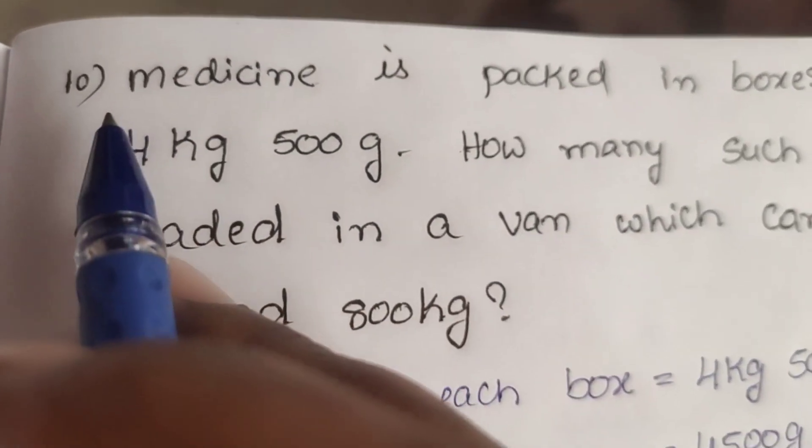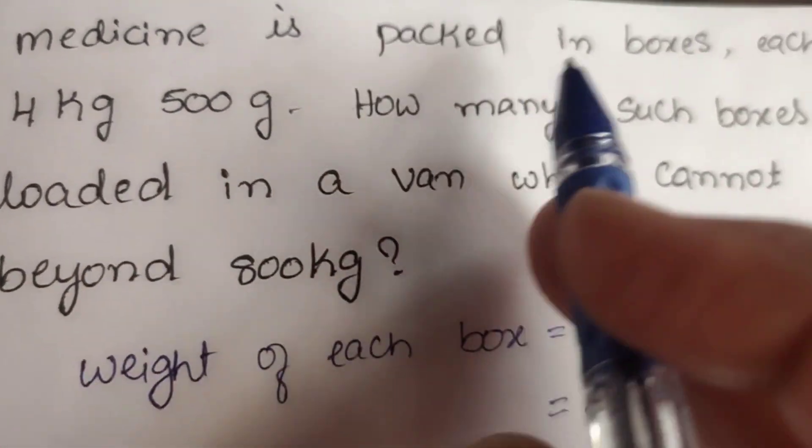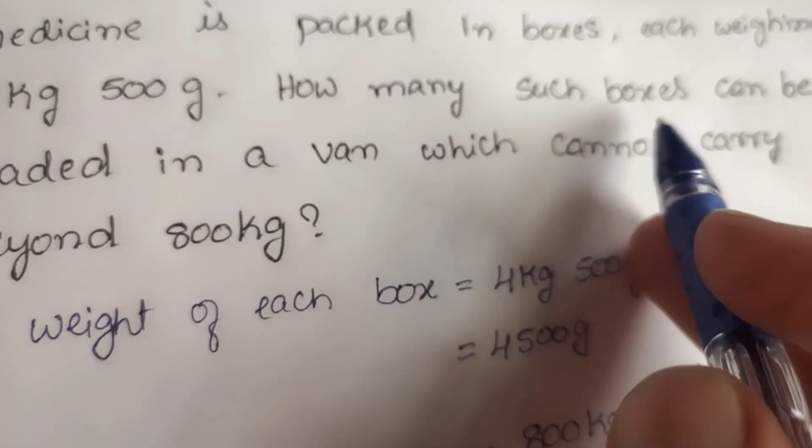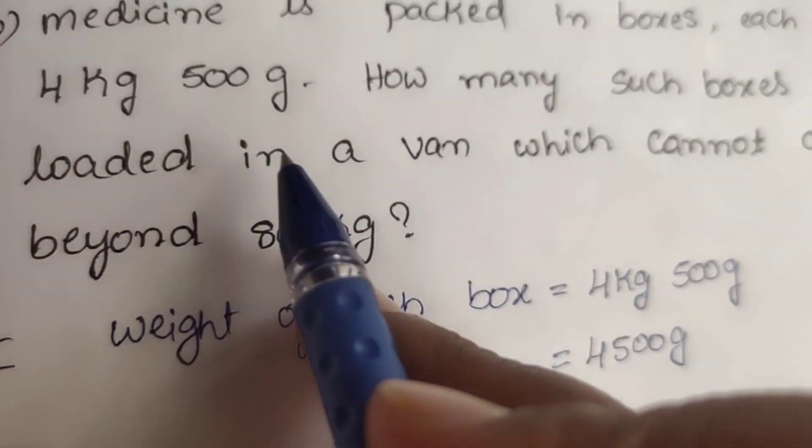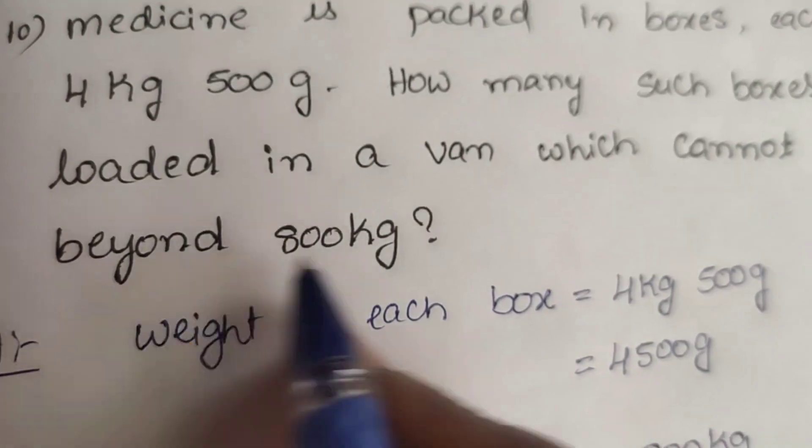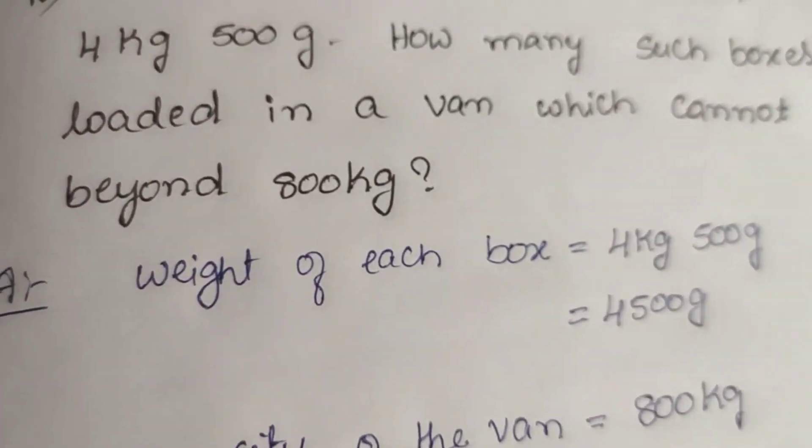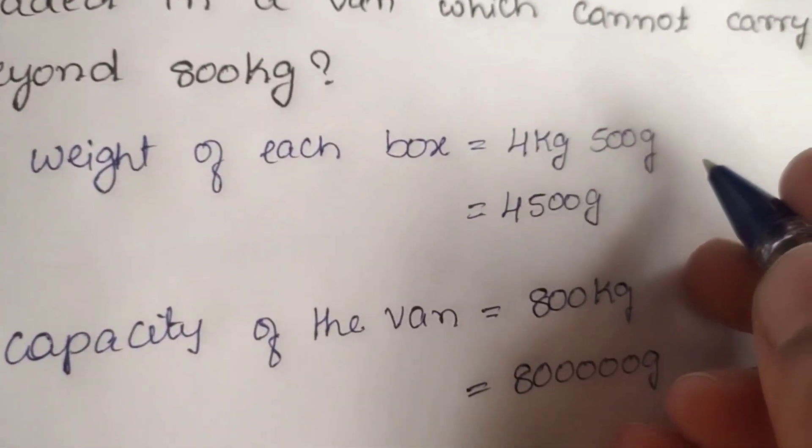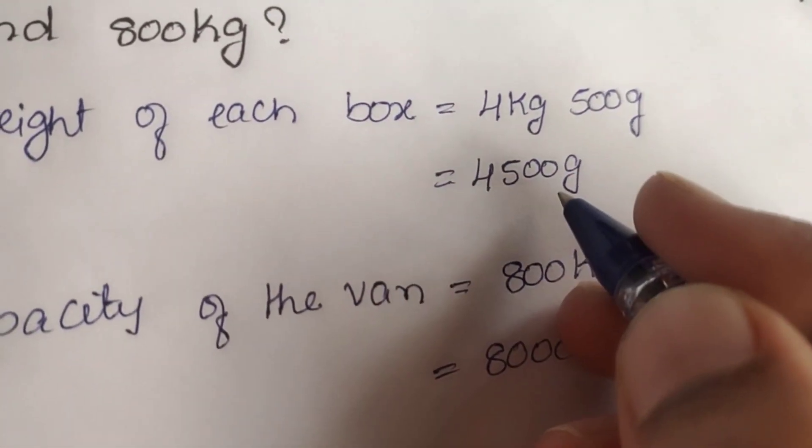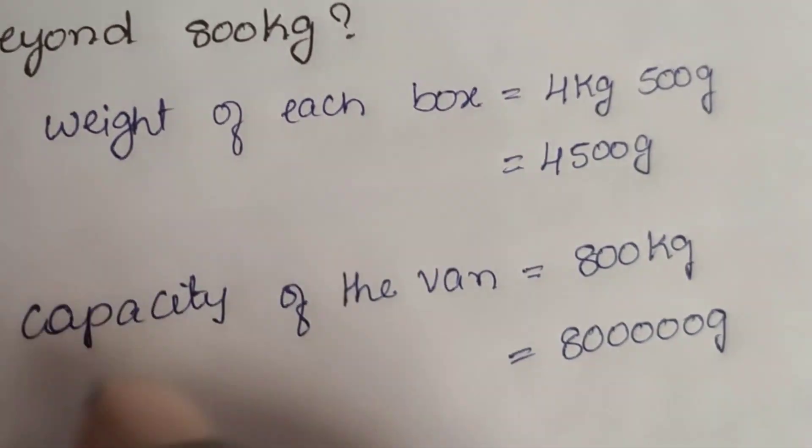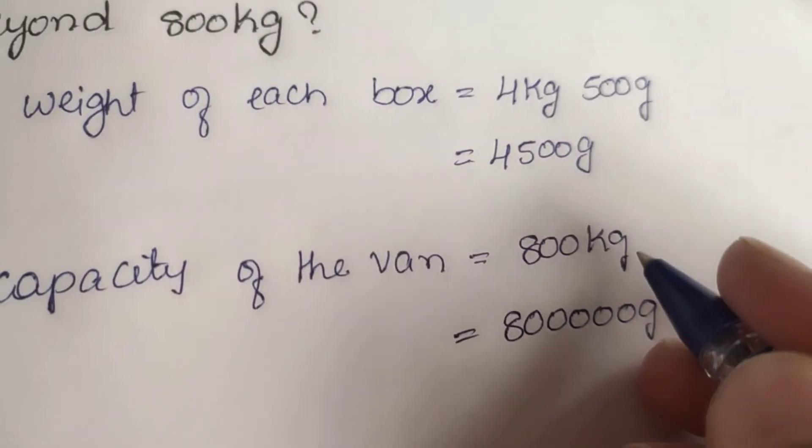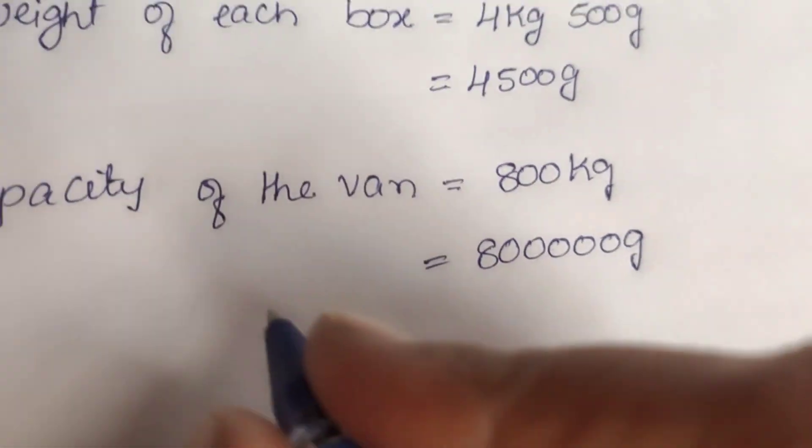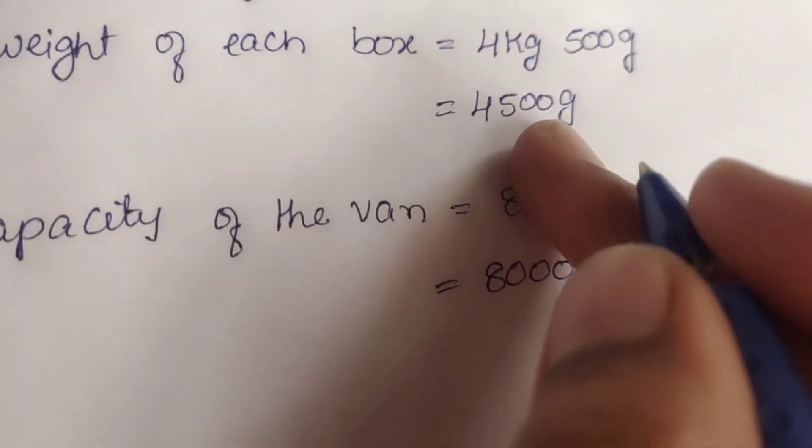Question number 10: Medicine is packed in boxes, each weighing 4 kg 500 grams. How many such boxes can be loaded in a van which cannot carry beyond 800 kg? Answer: Weight of each box is equal to 4 kg 500 grams, which is 4,500 grams. Capacity of the van is equal to 800 kg, which is 800,000 grams. How many boxes can be filled?